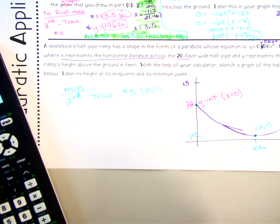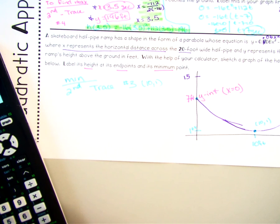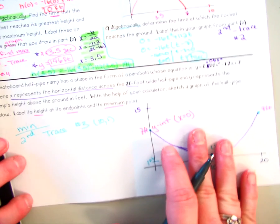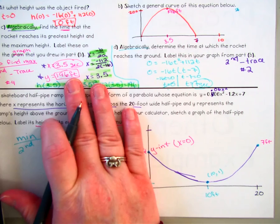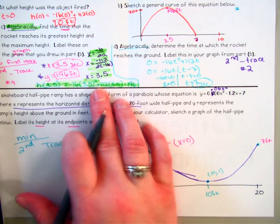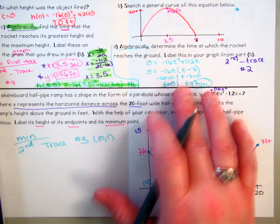So that's everything they asked us to do. We sketched our picture. We labeled its height at its end points and at its minimum points. So you just have to pay attention to what they're asking for. Sometimes it's just a graph, so it's manipulating your calculator, playing around with it a little bit. Sometimes you actually have to calculate either your vertex, so axis of symmetry, and then plugging it in. Or you're solving for your root, so you set your equation equal to zero, and then you solve it.